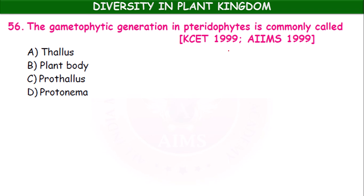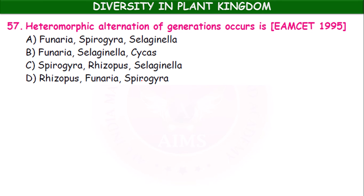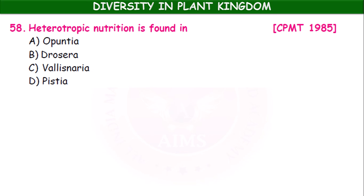Gametophytic generation — this question appeared in Karnataka Common Entrance Test 1999. The gametophytic generation is called morphic alternation of generation. Examples discussed include Funaria, Spirogyra, Selaginella, Rhizopus, and Cycas. Heteromorphic alternation of generation and heteromorphic nutrition are found in Cycas and related organisms.